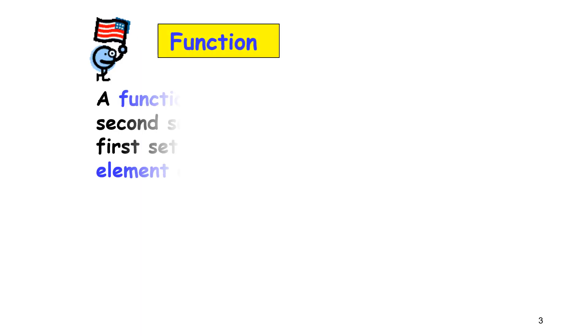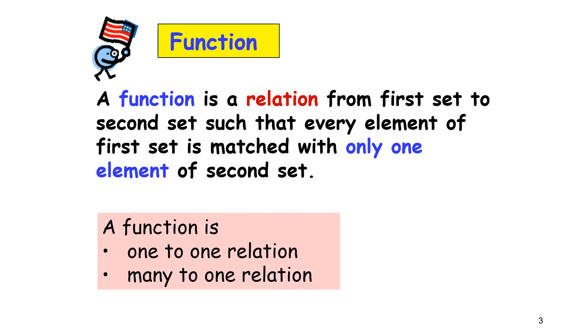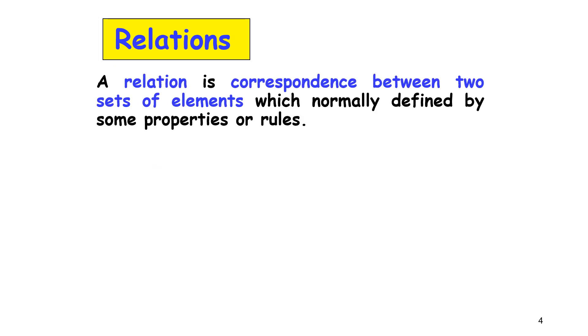Function. A function is a relation from first set to second set such that every element of the first set is matched with only one element of second set. A function is one-to-one relation or many-to-one relation. What is relation? A relation is a correspondence between two sets of elements which is normally defined by some properties or rules.